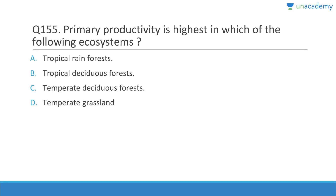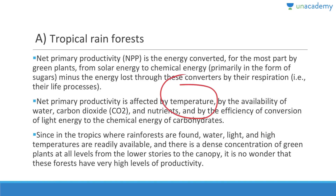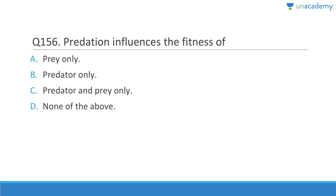Primary productivity is highest in tropical rainforests. Net primary productivity is the energy converted by green plants from solar energy to chemical energy, primarily as sugar, minus energy lost through respiration. It is affected by temperature, water availability, CO2, nutrients, sunlight, and efficiency of light conversion. In the tropics, water, light, and high temperatures are readily available with dense concentrations of green plants at all levels.